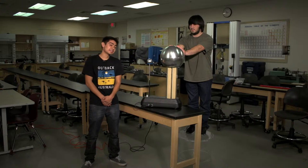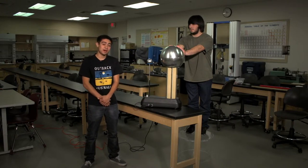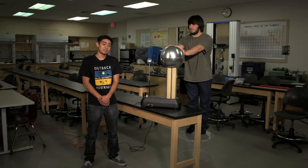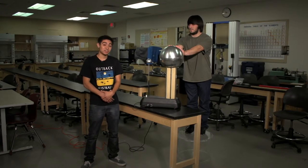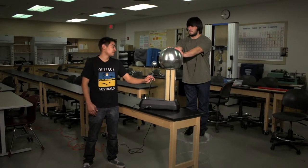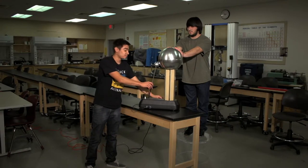Once he takes his hands off the dome, he wants to very quickly bring them to his body and then step down. That way, all of the electric charge on his body will dissipate into the earth. Now we can see how this experiment works.